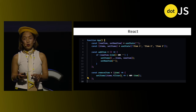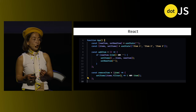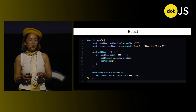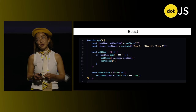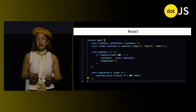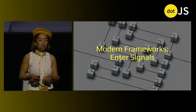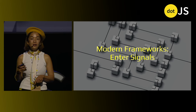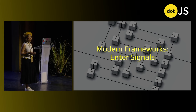React, for example, with its virtual DOM and declarative approach transformed our understanding of building user interfaces. The introduction of hooks further streamlined reactive programming, ensuring components react intelligently to state and context changes. Fast forward to today, frameworks like SolidJS, Svelte, and Vue are leading the charge in signals — a fundamental building block of reactivity.